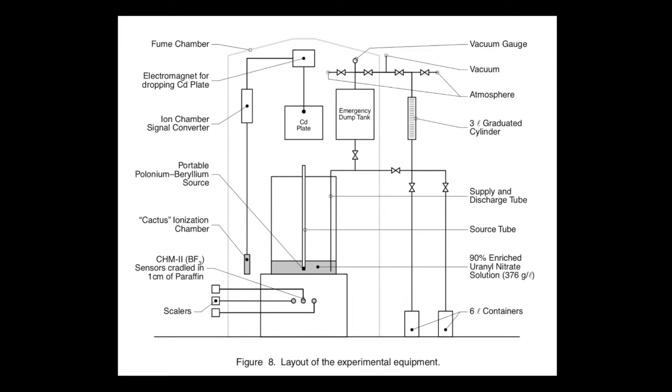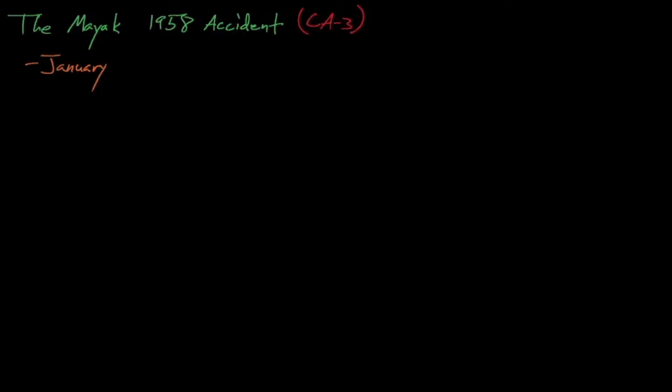As shown here in this diagram, these larger vessels were to be elevated to minimize neutron reflection from the floors, and after the experiment ended, the solution was to be drained into favorable geometry 6-liter bottles. The team began these experiments on January 2, 1958, which was their first day back at work after the New Year holidays.